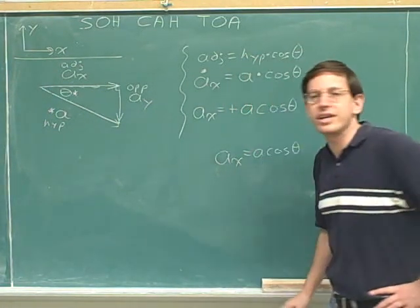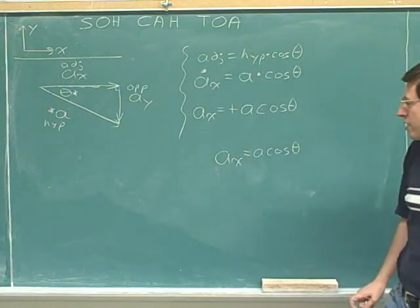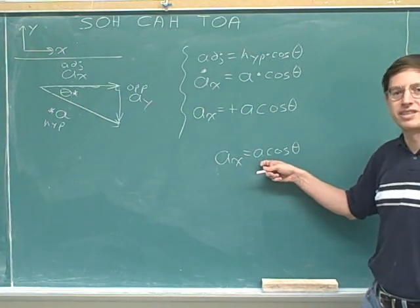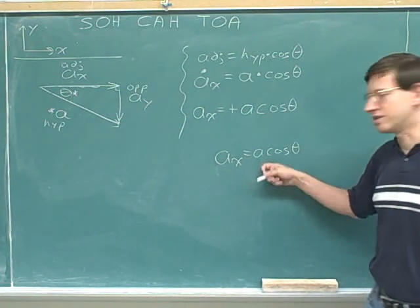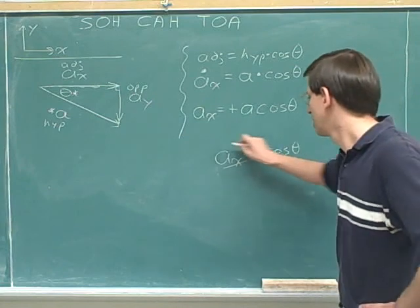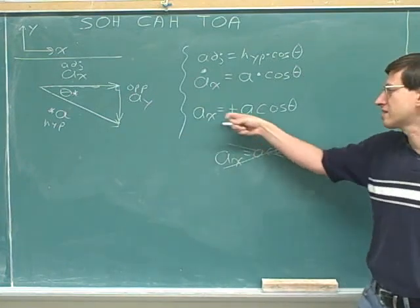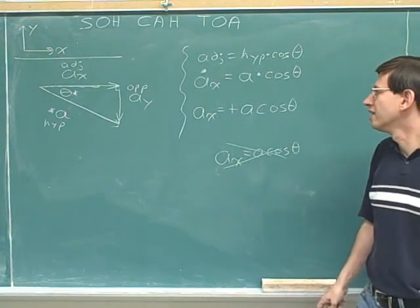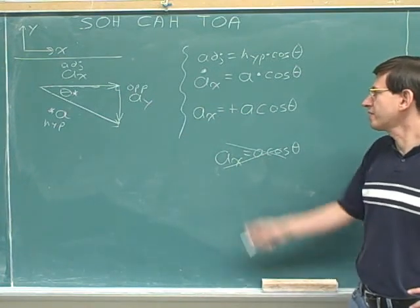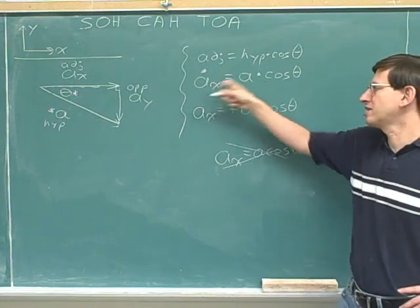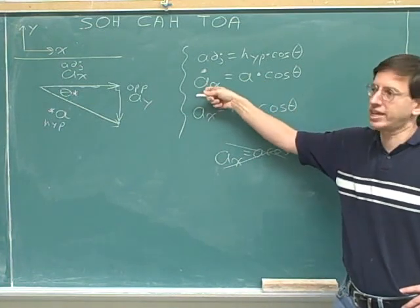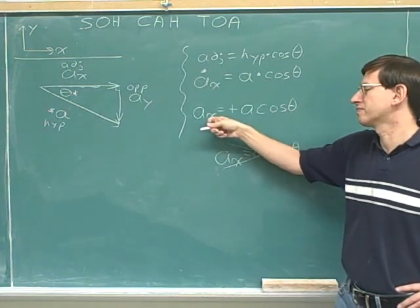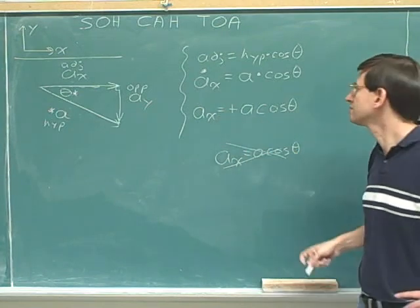If there's anybody out there who did this problem on their own and got just the magnitude as their answer, you blew it — this is not the right answer. The right answer must include a sign. A sign component has to include a sign. It would be perfectly okay to write the magnitude without a sign, but that's just the magnitude. You can't stop there; you've got to go on and give your final answer including a sign.